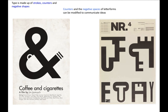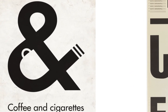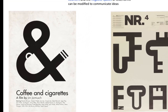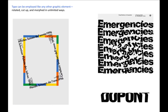Type is made up of strokes, counters and negative spaces. Counters and the negative spaces of letterforms can be modified to communicate ideas. While all type styles communicate through their letterforms, the communication of specific ideas is more pronounced in decorative typefaces. Type can be the dominant element in a composition. Type can be employed like any other graphic element — rotated, cut up and morphed in unlimited ways.